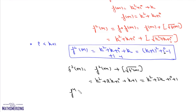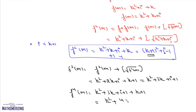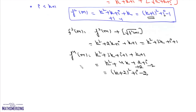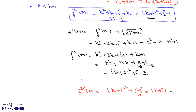Similarly, f⁴(m) = k² + 3k + i + 1 + floor(√(k² + 3k + i + 1)). The floor of the square root is again k+1, so f⁴(m) = k² + 4k + 2 + i. Adding and subtracting 2, this equals (k+2)² + (i−2). Continuing this pattern, we find f^(2i)(m) = (k+i)² + (i−i) = (k+i)², which is a perfect square.